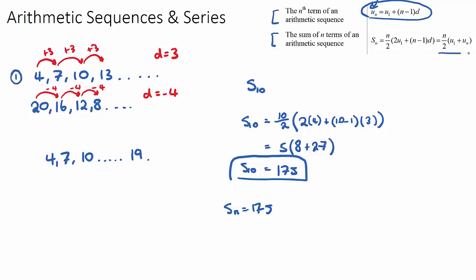The last thing to touch on is this alternative formula, which is also the sum of n terms in an arithmetic sequence. You can use this shortcut formula if you already know the last term in the sequence. For example, if you need to find S10 and you already know U10, you can plug it straight in. Be aware of this when practicing questions — if you found U8 in a previous part, you can use the shortcut to find the sum of the first 8 terms. An arithmetic sequence has a common difference, and a series is the sum of those terms. Good luck.